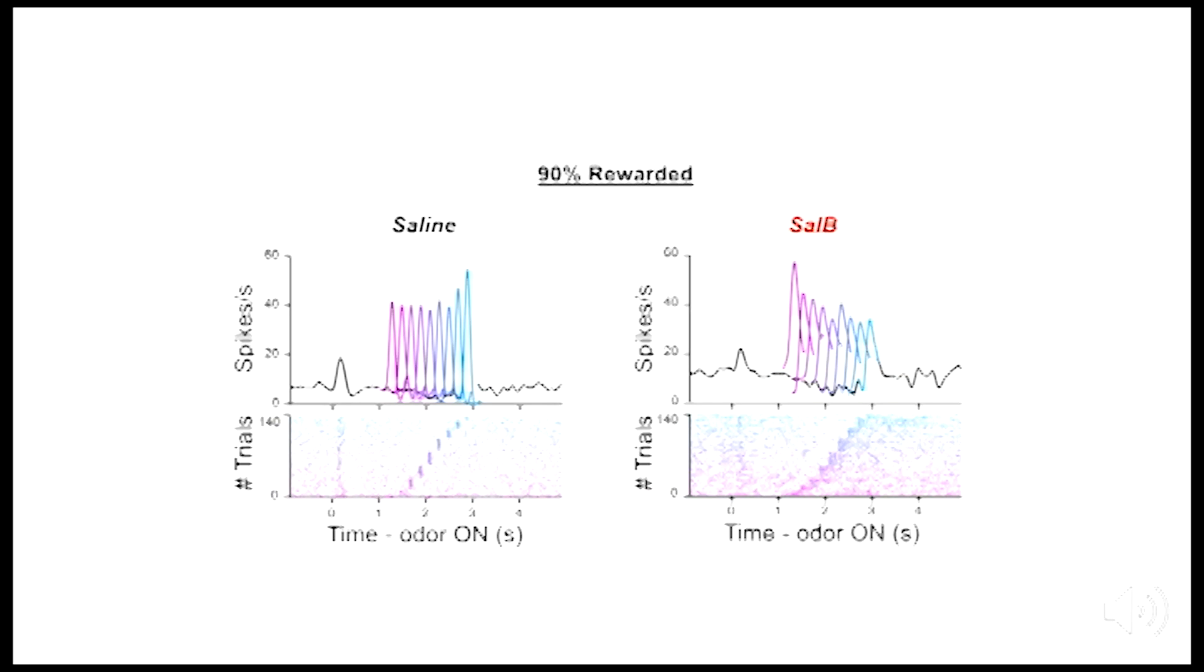Now where this gets more interesting is the 90% rewarded task. Similar to before, in our control condition, dopamine neurons largely showed positive temporal modulation in the 90% rewarded task as if expectation decreased as a function of time. However, upon shutting down the medial prefrontal cortex, we found many neurons, like this neuron, that showed negative temporal modulation.